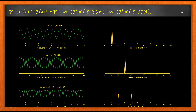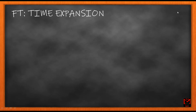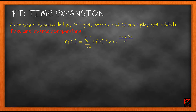That is all for mixing of signals. Now let's go to the next topic: the time expansion property of Fourier transform. It tells us that when a signal is expanded, its Fourier transform gets contracted, or more cycles get added — they are inversely proportional. Expansion of a signal means the spacing between the values of the signal is increased. When the spacing between points increases, the FT gets contracted, meaning the spacing between points in the FT gets smaller.